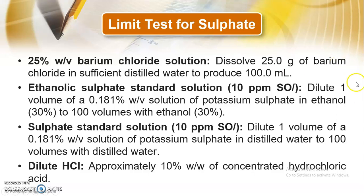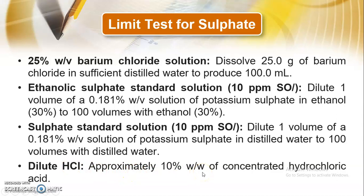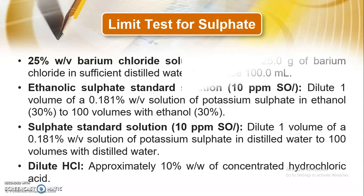To prepare the ethanolic sulphate standard solution, dilute one volume of 0.181% weight by volume solution of potassium sulphate in ethanol (30% ethanol) to 100 volumes with ethanol. Alternatively, dilute one volume of 0.181% weight by volume solution of potassium sulphate in distilled water to 100 volumes with distilled water. Dilute HCl is also required — approximately 10% weight by weight of concentrated hydrochloric acid added to 100 ml of water.